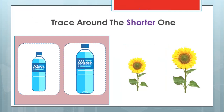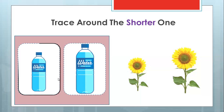Now what does it say? It says trace around the shorter one. Look at the water bottles — they look similar. The water bottle on the left is shorter than the water bottle on the right. The water bottle is blue. So we trace around the shorter bottle. Let's trace together. Done. Good.